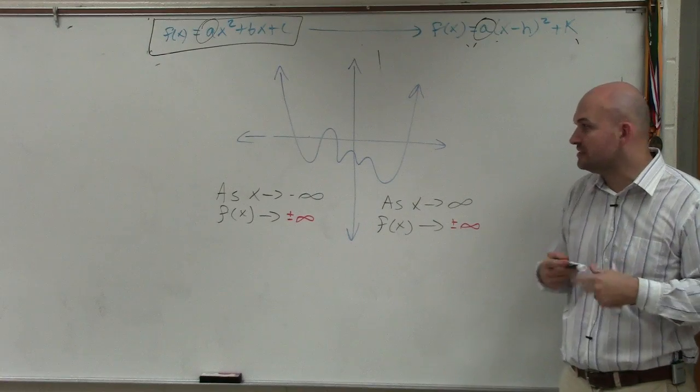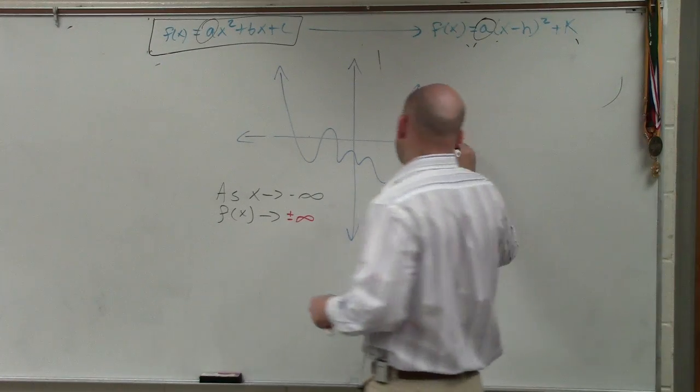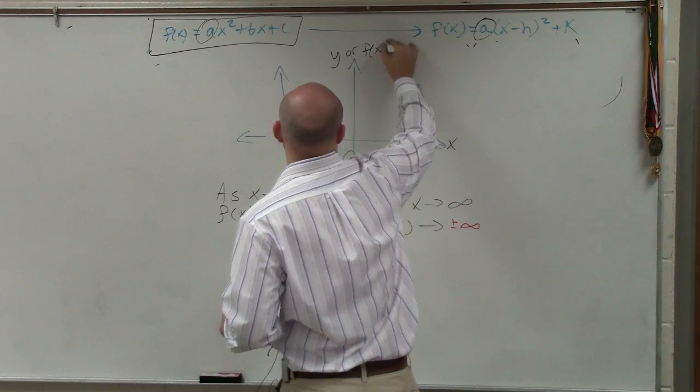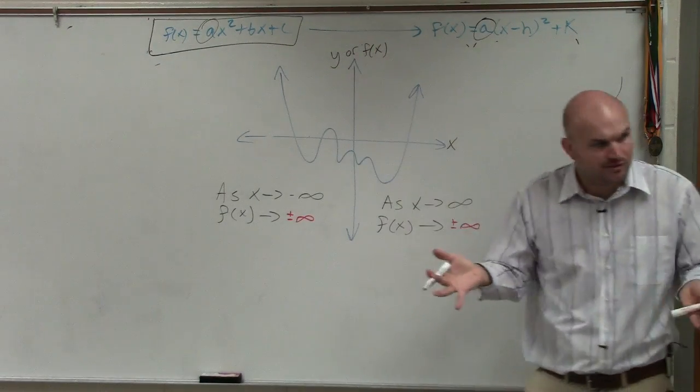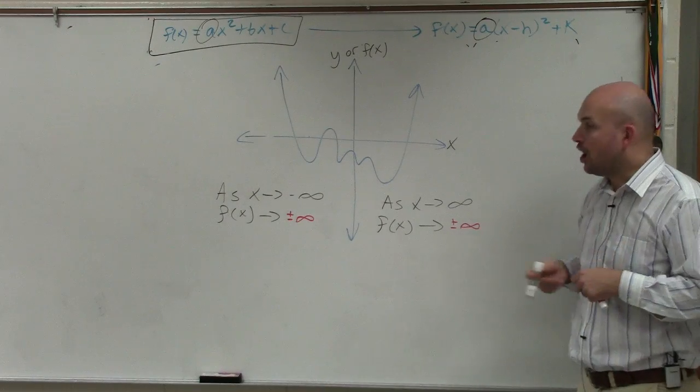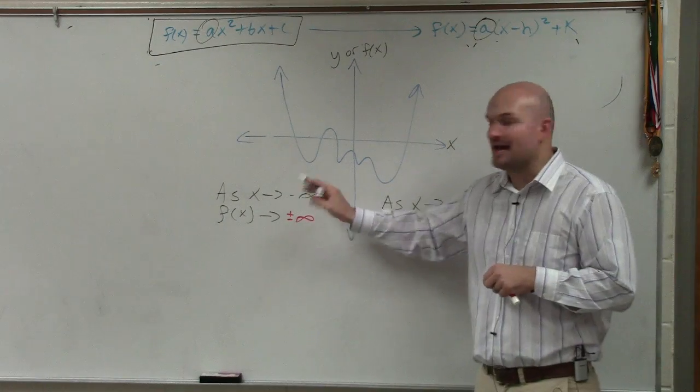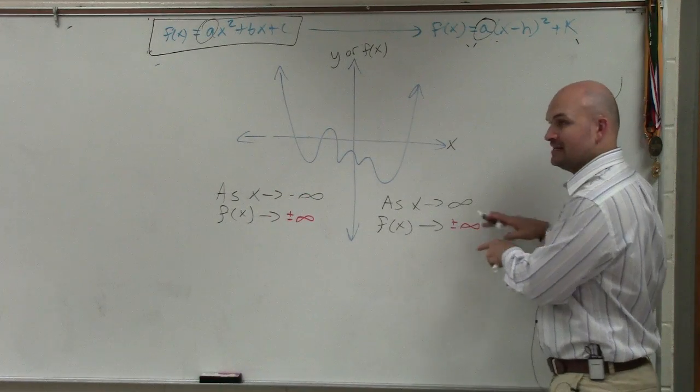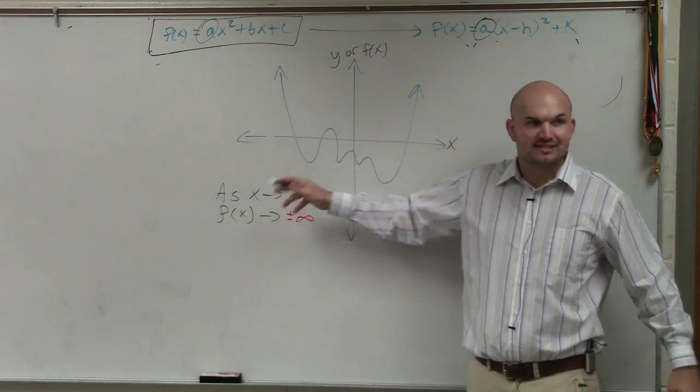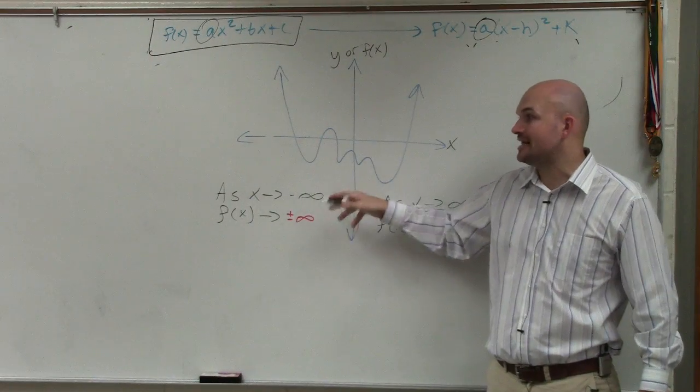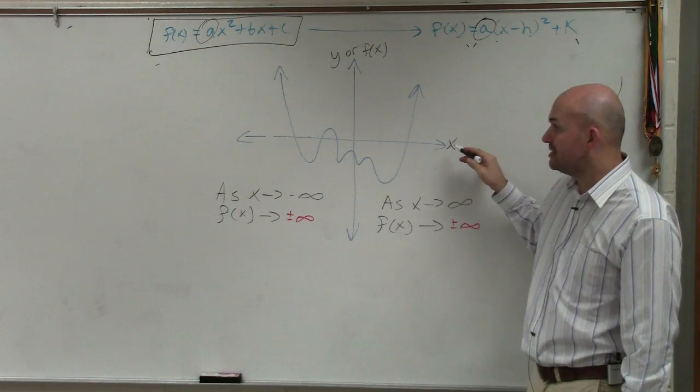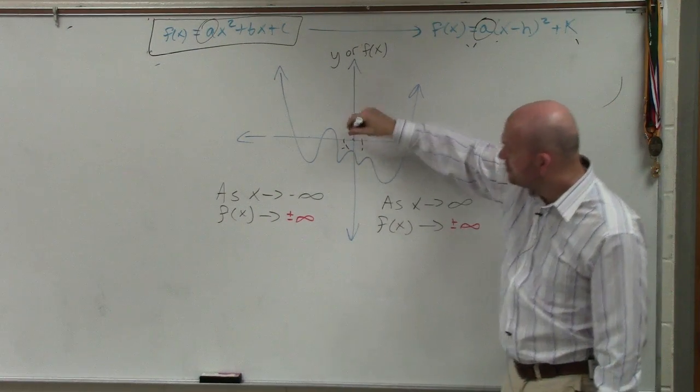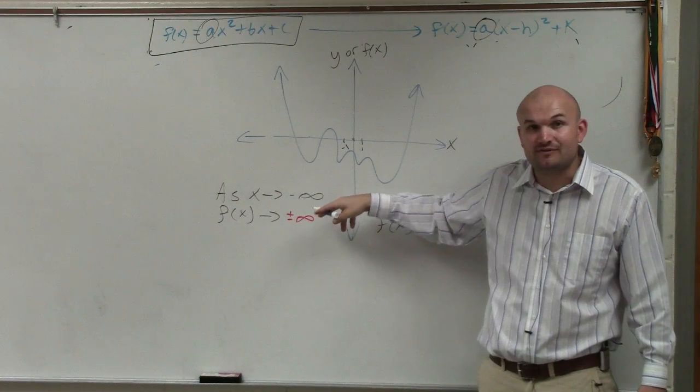So basically, what you have to do is think about this. You have an x-axis and a y-axis, or we call this the f of x-axis. They're both the output value. And I always like to write as x goes to negative infinity on the left-hand side and as x goes to infinity on the right-hand side. Because what is this saying? As x goes to negative infinity, here's your x-axis, here's 0, right? Here's 1, here's negative 1. So as you go towards negative infinity...